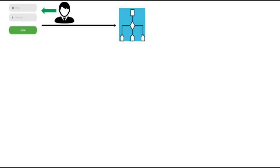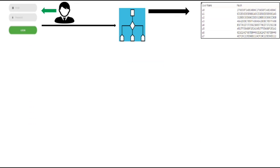This hash value is irreversible and gets stored on the system in a password file. This hash value provides a certain kind of protection since it is irreversible and the hacker cannot convert it back into its plain text password.